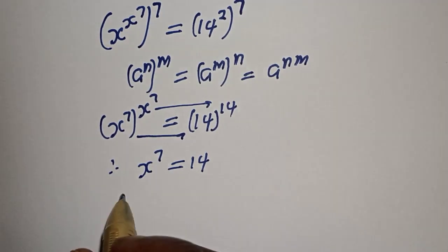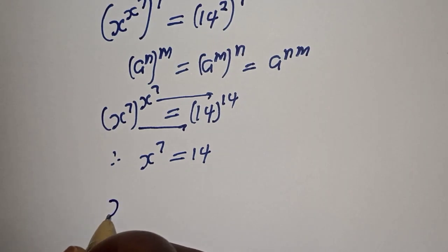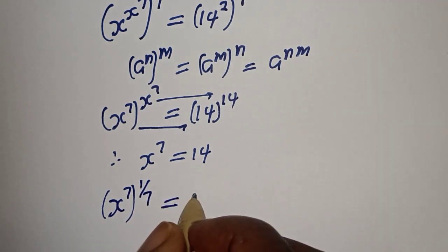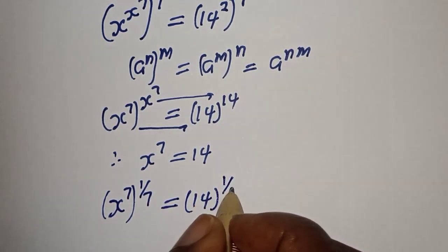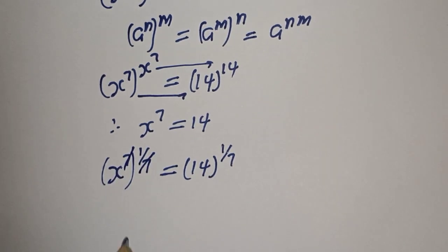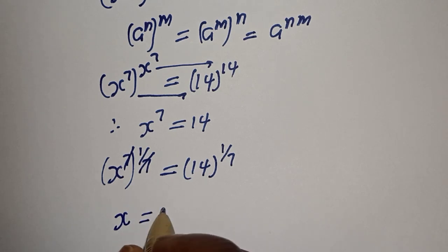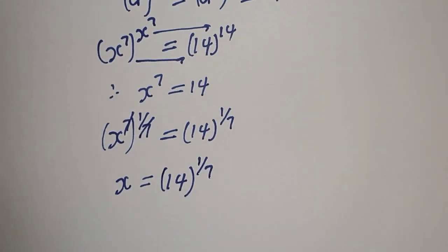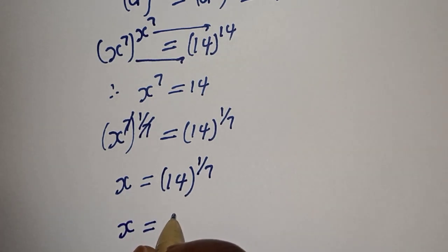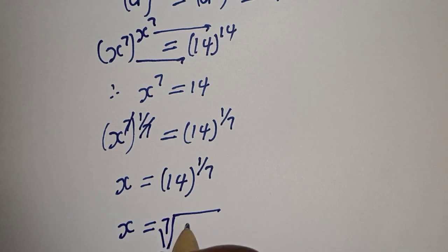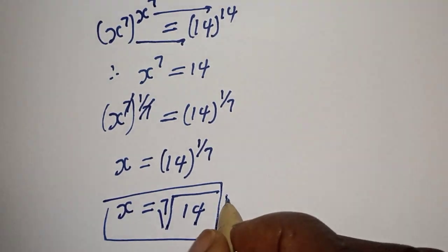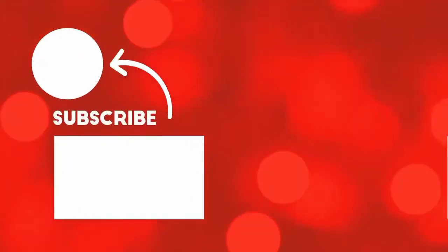Let's multiply the exponent of both sides by 1 over 7, because we are looking for the value of S. S raised to power 7 multiplied by 1 over 7 is equal to 14 multiplied by 1 over 7. This will cancel out, so S is equal to 14 raised to power 1 over 7, which is the 7th root of 14. This is the final answer. Before you leave, like, share, comment and subscribe. Thank you, bye bye.